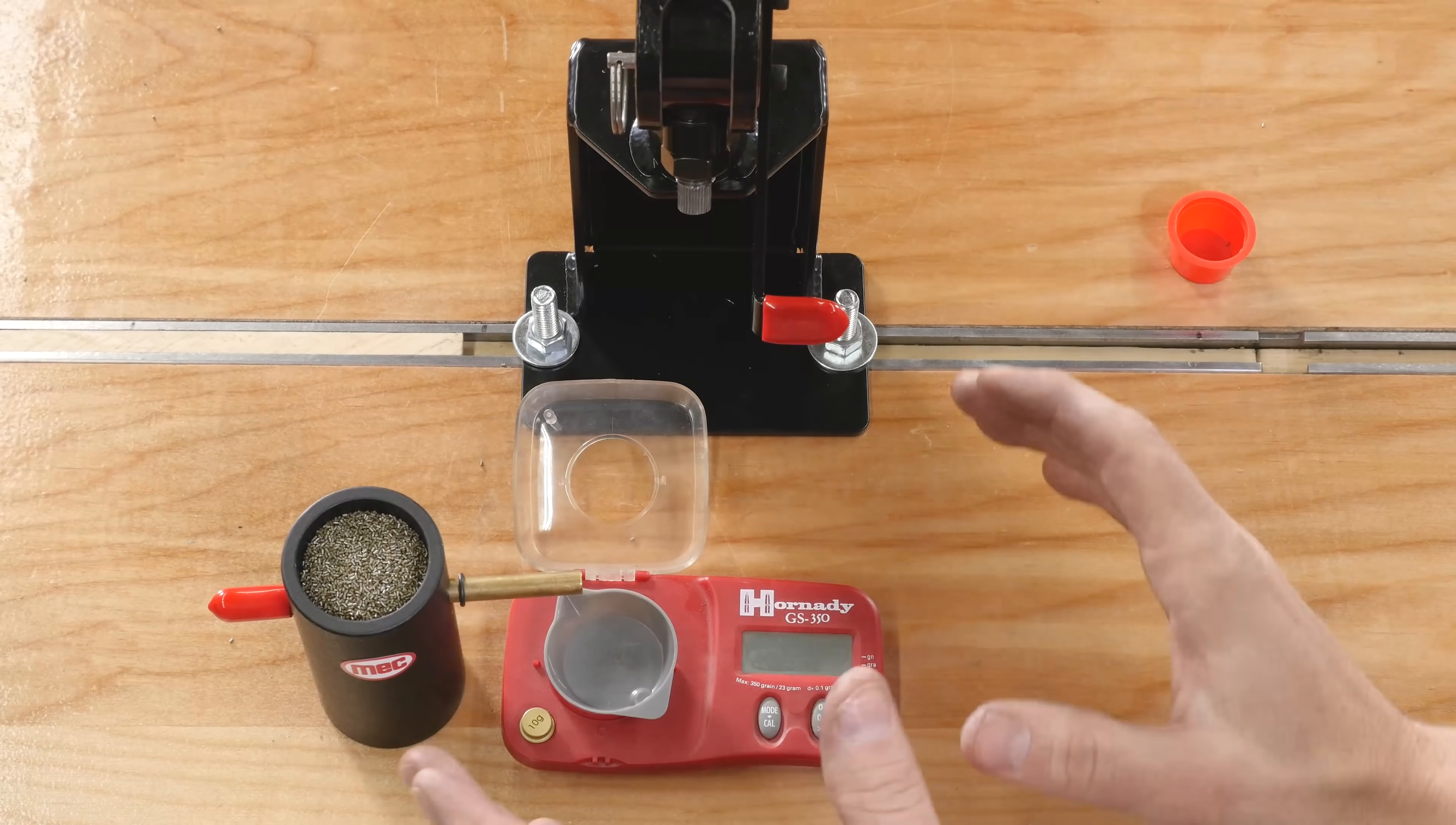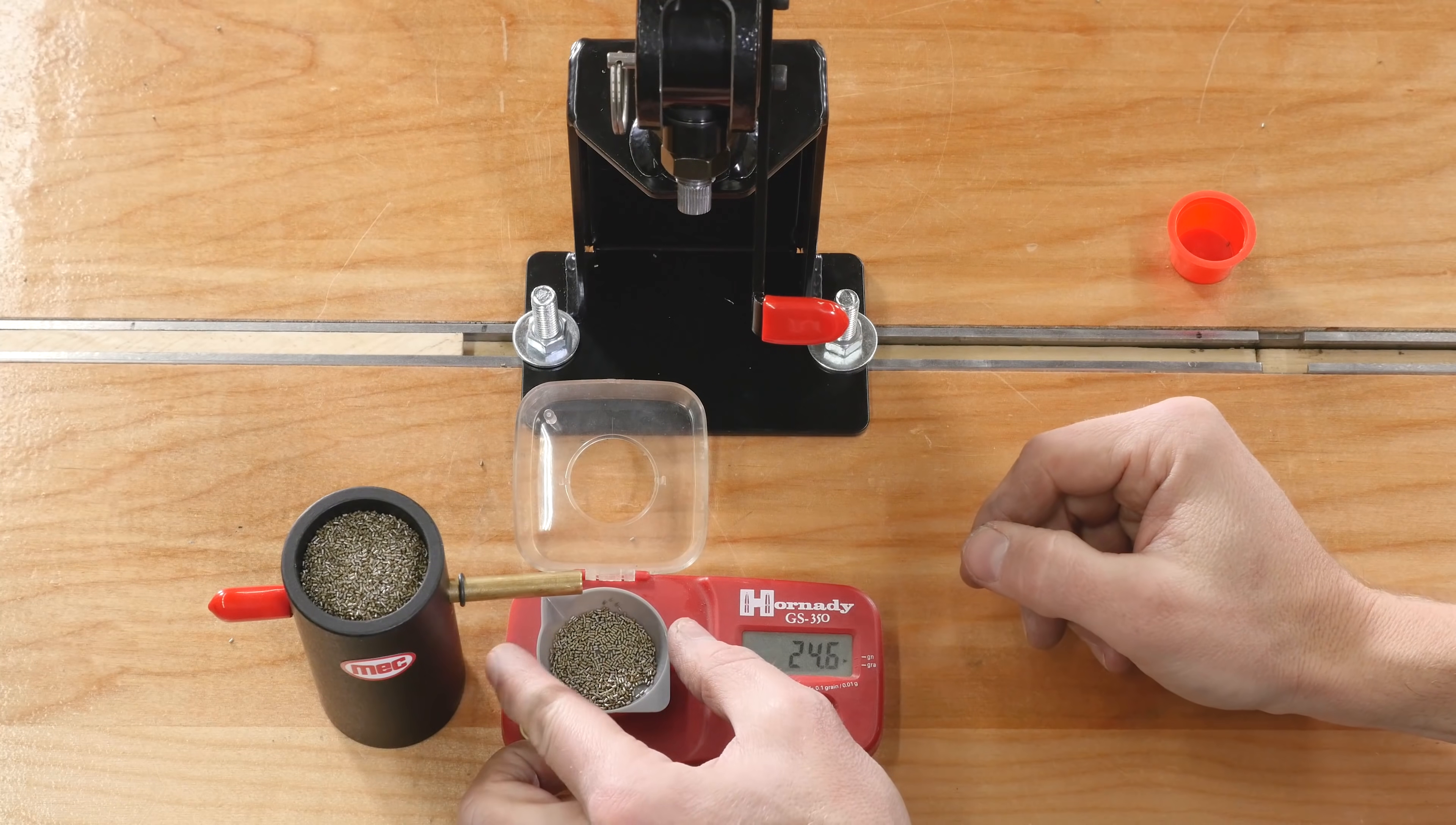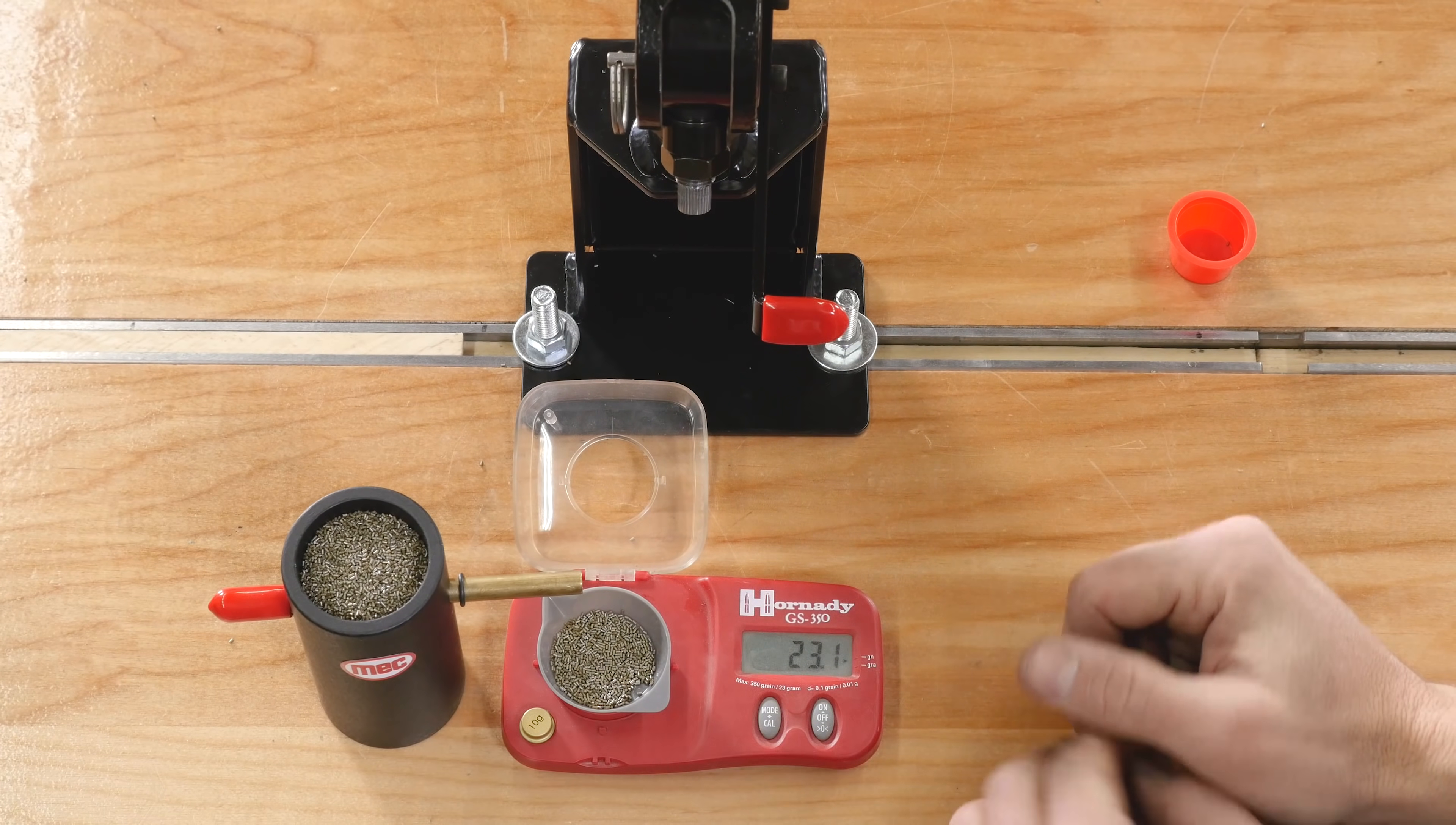Okay. So, what we wanna be at is 23.6 grains. That's the load that we're working with. So, let me first turn on the scale with the pan on the platen. And, what we're gonna do is we're gonna try and be down at about 23 and trickle up. Maybe 23 to 23.3. Somewhere in there. Okay. So, we're at 23.1. That's pretty close. Let's check that one more time. Okay. 23.1 again. That looks nice and consistent.